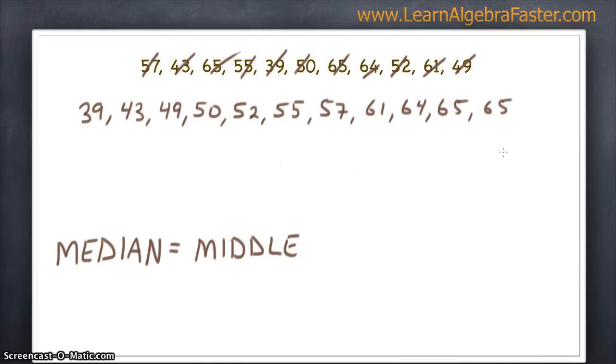So for 11, we know that the sixth one will be in the middle, and we can do this by counting off slowly from each side. There's one from each side, 2 from each side, 3 from each side, 4 from each side, 5 from each side, and we know that this one is the middle of the set, so our median is 55.